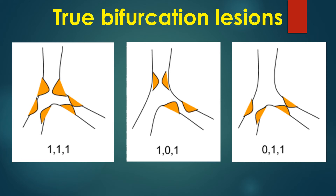While treating true bifurcation lesions, consideration should be given to the extent of the disease in the side branch — whether the lesion is limited to the ostium or involving the vessel beyond the ostium — as well as the size of the side branch, the angle of takeoff, and the territory of distribution of the side branch.